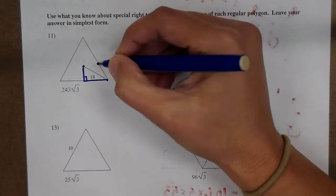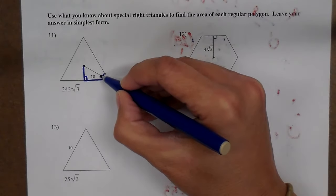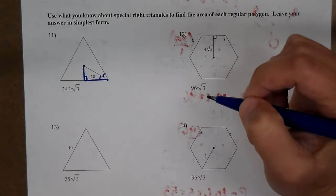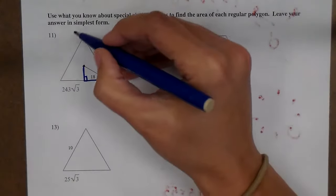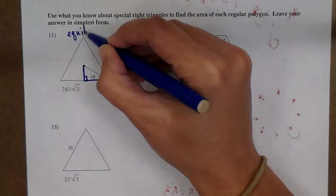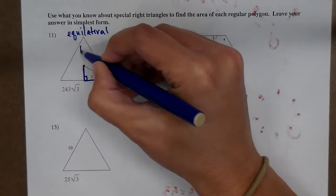The radius of a regular polygon is going to bisect the corner angles. It's going to cut it in half. Now if this is a regular triangle, that means it's equilateral. And if it's equilateral, all three angles are 60 degrees.